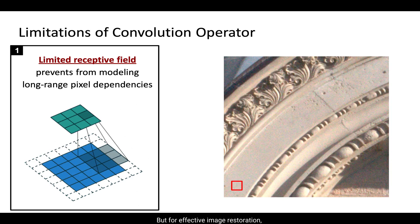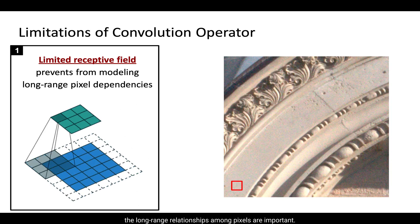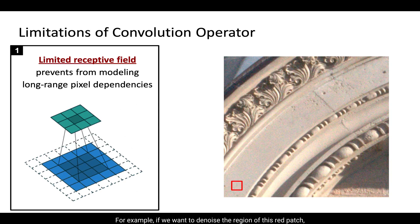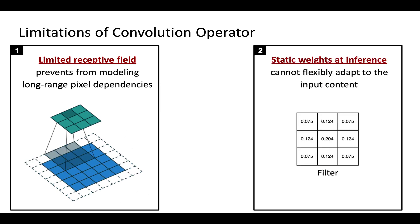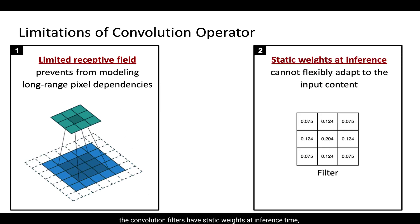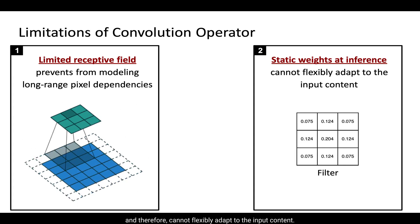For effective image restoration, the long-range relationships among pixels are important. For example, if we want to denoise the region of this red patch, we can exploit the information from other similar patches in the image. The second issue is that once a CNN model is trained, the convolution filters have static weights at inference time and therefore cannot flexibly adapt to the input content.